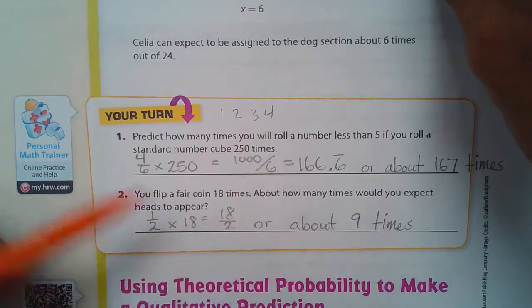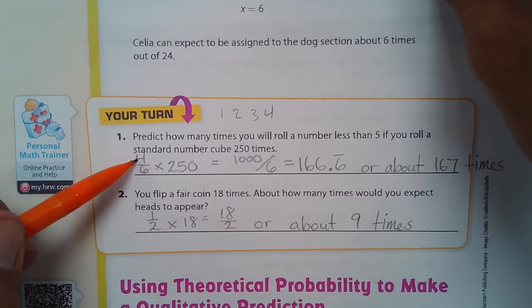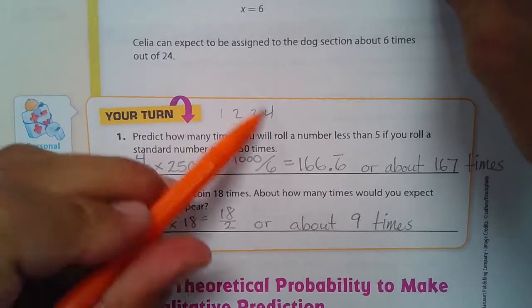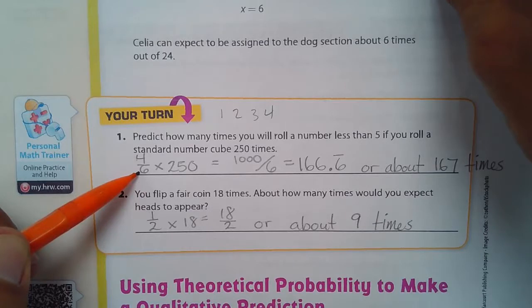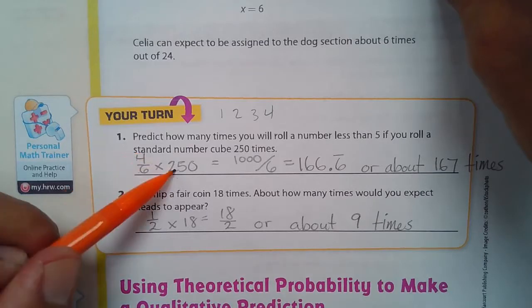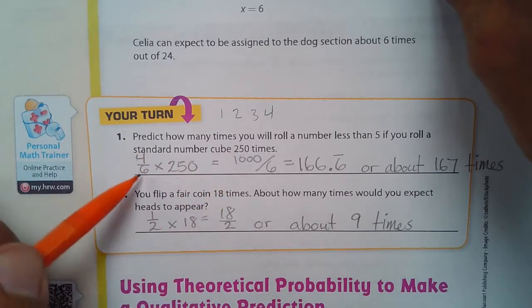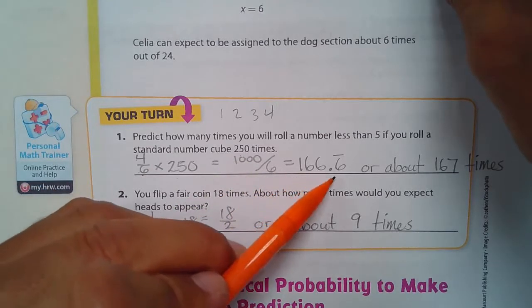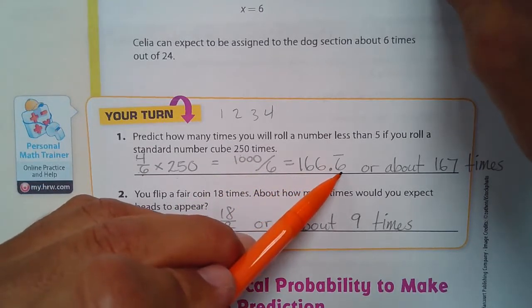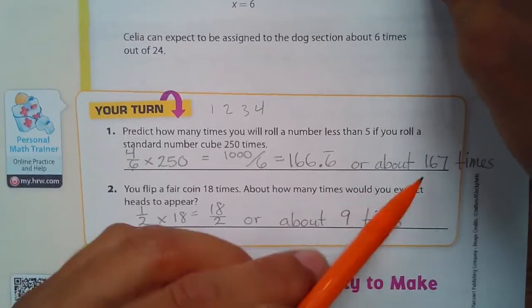There's four numbers. So that's why I have the four there. Not because of just the number four, but because I have four opportunities to get less than five out of a total of six sides in the number cube. And I multiply that by 250. Four times 250 is 1000 over six. And when I divide this, I get exactly 166.6 repeating. And I just rounded that to 167 times.